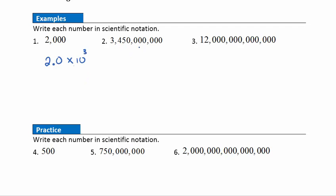Example 2: write three million four hundred and fifty thousand in scientific notation. Start by placing the decimal correctly — that's 3.45, one digit to the left of the decimal. To move the decimal from 3.45 to make this number, we count nine places, so we write 3.45 times 10 to the ninth power.